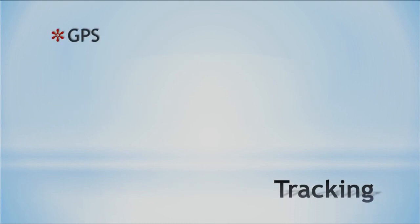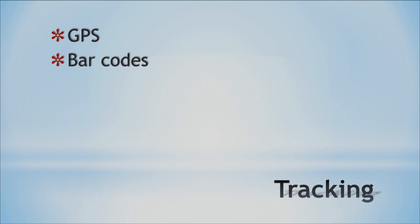Tracking uses GPS to figure out where things are — you can use this with your packages, vehicles, and other items to see their exact location. Barcodes are another way to track things like inventory. So there are different ways and tools we have for tracking, and that wraps up this section. Thank you and we'll see you soon.